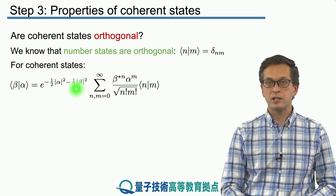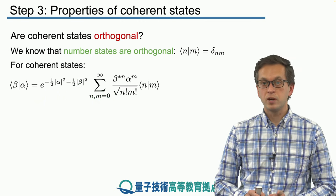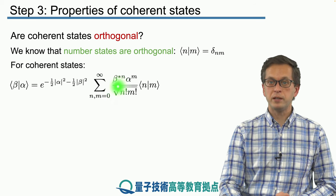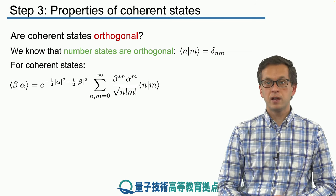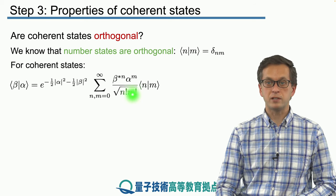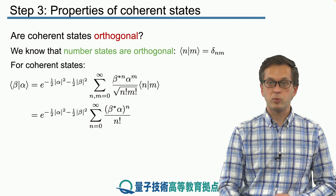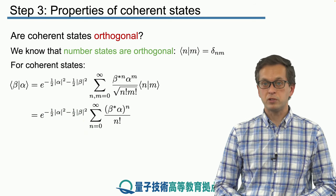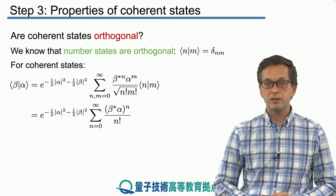When we write it down as a double sum, we obtain the following expression. We've got the normalization factors for alpha and for beta, and then a double sum going from 0 to infinity for both indices n and m. We've got beta conjugate — because beta is in general a complex number — to the power of n divided by square root of n factorial, and similarly alpha to the power of m divided by square root of m factorial, times the inner product of the two number states n and m, which equals delta nm. Substituting that in, we simplify the double sum into a single sum of the conjugate of beta times alpha, to the power of n divided by n factorial.